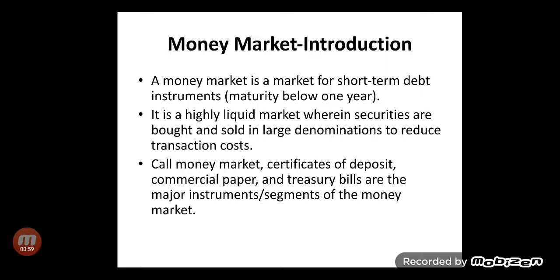A money market is a market for short-term debt instruments with maturity below one year. It is a highly liquid market wherein securities are bought and sold in large denominations to reduce transaction cost. Although transactions take place only for a short period of time, they are high-denomination transactions. Banks, other financial agencies, and governments come to the money market to collect money for their short-term operations.